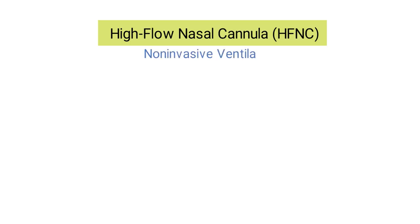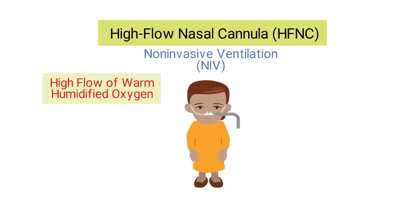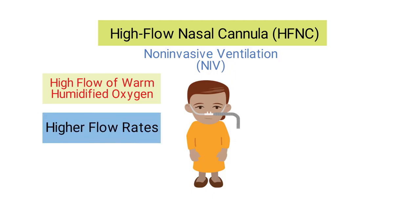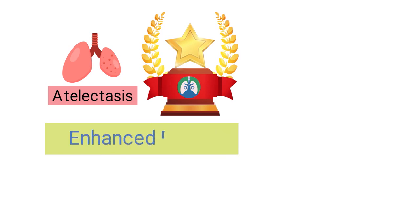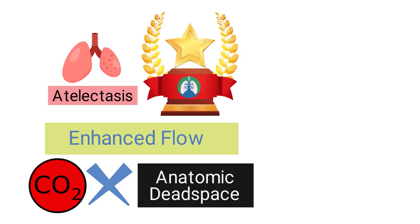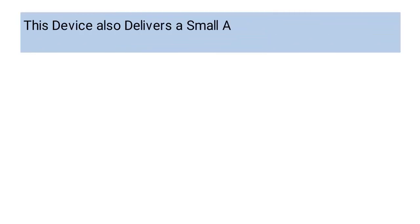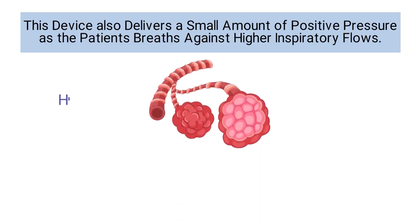Next up is the high flow nasal cannula, a type of non-invasive ventilation that delivers a high flow of warm humidified oxygen through a nasal cannula with larger prongs. This allows higher flow rates to be delivered, which provides the patient with a high level of comfort. The high flow nasal cannula has many potential benefits for patients with atelectasis. It provides enhanced flow which helps wash out CO2 from anatomic dead space, and can also provide a more stable FiO2. In addition, this device delivers a small amount of positive pressure as the patient breathes against higher inspiratory flows, which helps with the recruitment of collapsed alveoli.